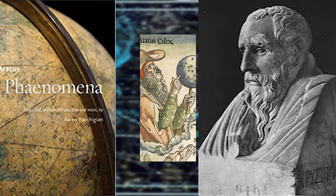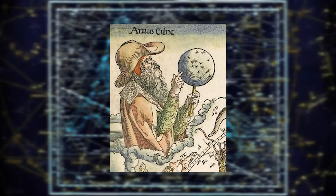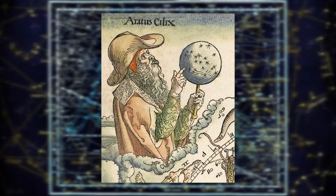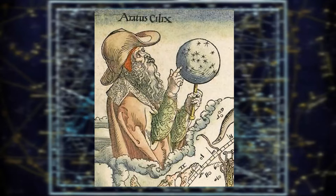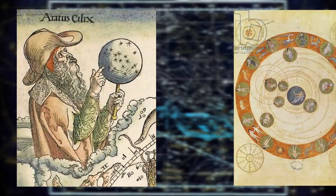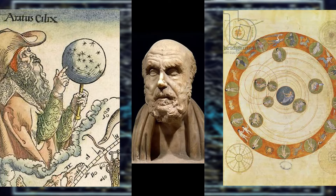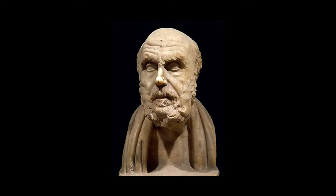Aratus concentrates on the constellations surrounding the North Pole — Ursa Major, Ursa Minor, Draco and Cepheus — whilst Orion serves as a point of departure for those to the south. He uses an Earth-centric model and presumes the immobility of the Earth and the revolution of the sky about a fixed axis. The opening of the poem asserts the dependence of all things upon Zeus.